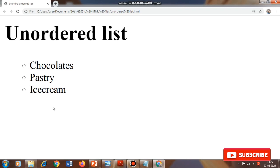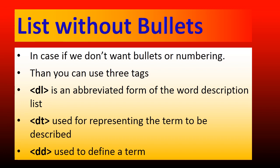Besides unordered list and ordered list, in HTML you can prepare one more type of list — a list without bullets or numbering. This is called a description list, using the tag pair DL and slash DL. Between DL and slash DL, you use two tags: DT for the term you want to describe, and DD for the definition of that term. We will now do it practically.